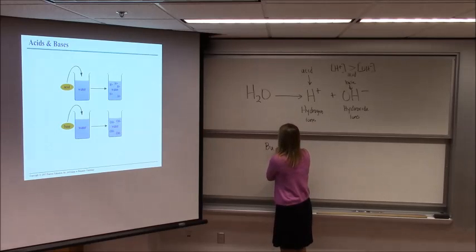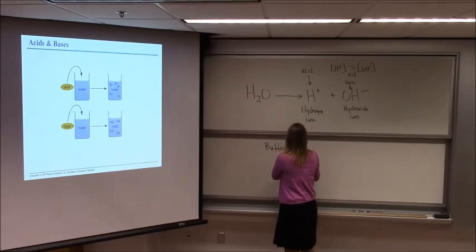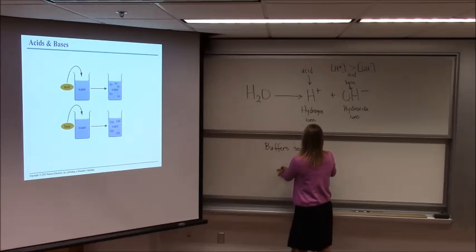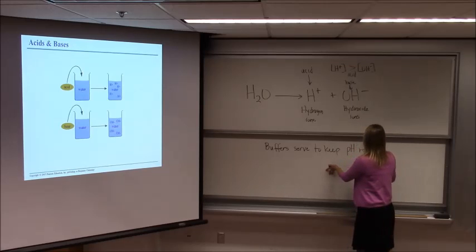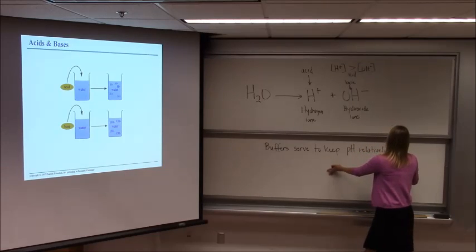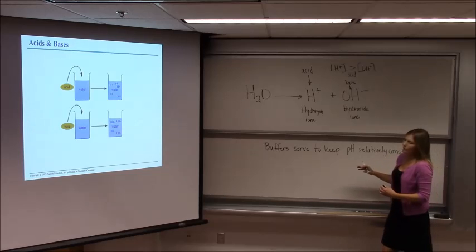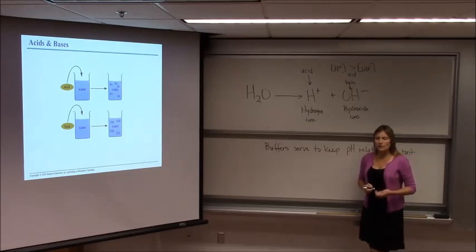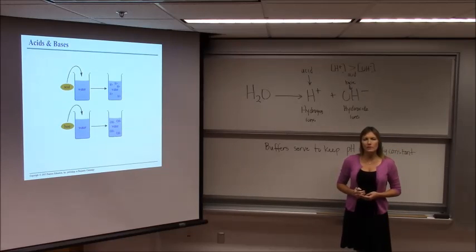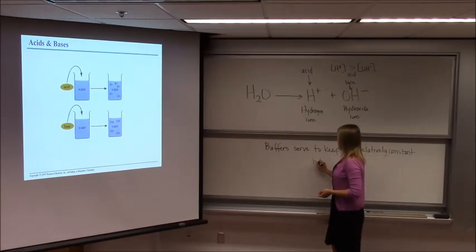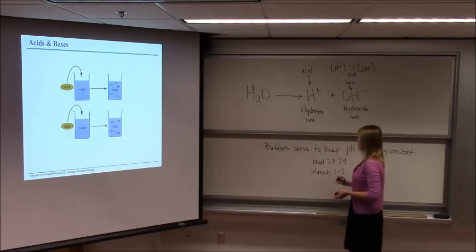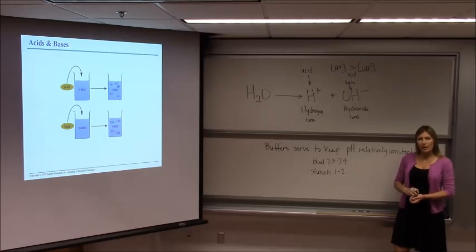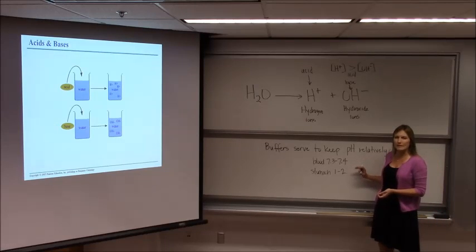So the pH of the stomach is significantly lower than the pH of the blood. So the pH of the blood is about 7.3 to 7.4. The pH of the stomach might be pH 1 to 2. So the role of buffers is to keep pH constant for whatever normal is in that environment.